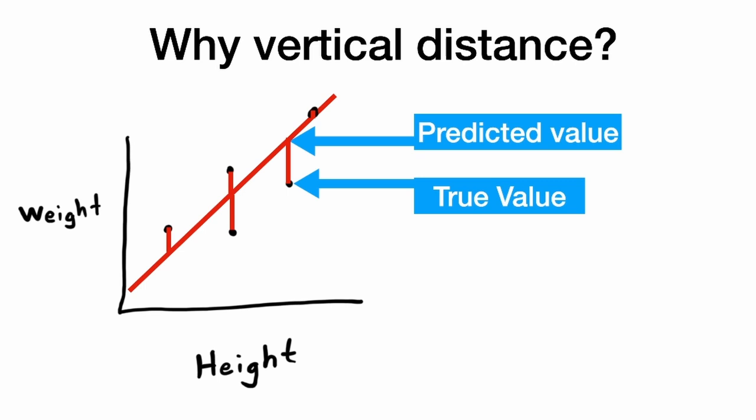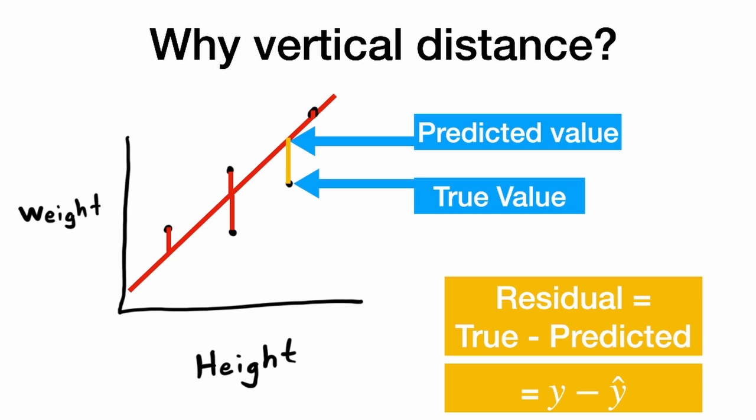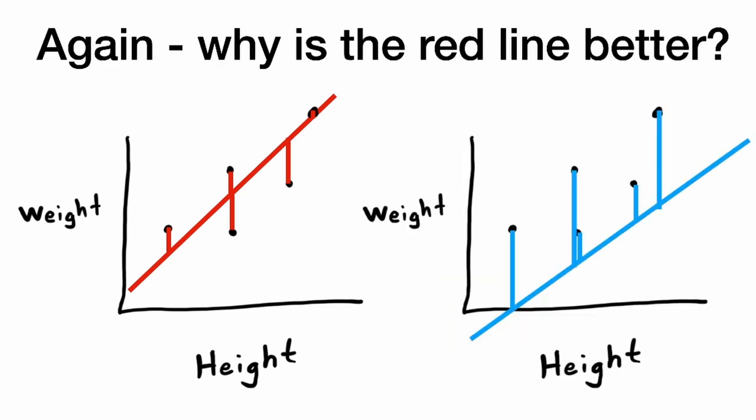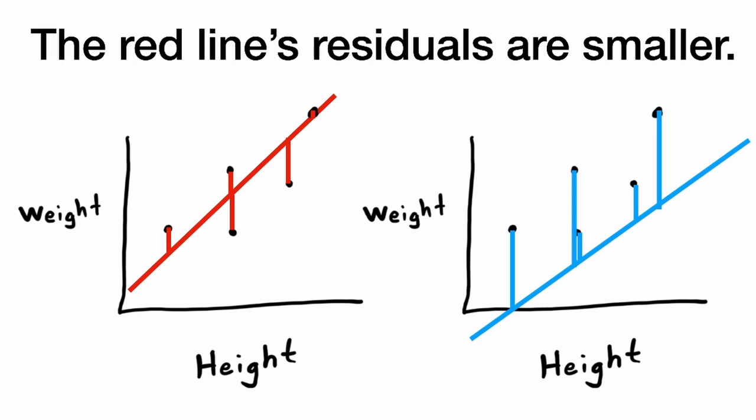Here, we have our predicted value on the line, and the true value, the dot, our data. And the residual is the true value minus the predicted. Or in mathematical notation, we would call this the y minus the y-hat. And again, why is the red line better? Well, the red line's residuals are smaller.